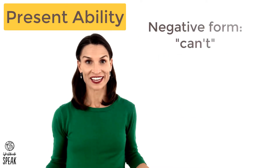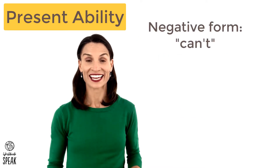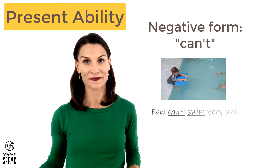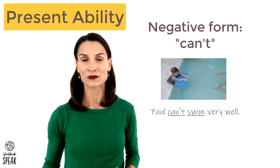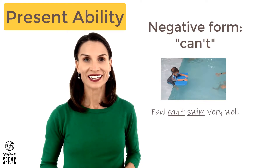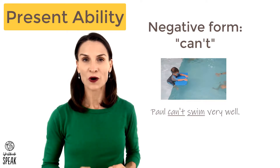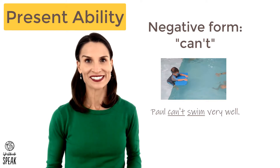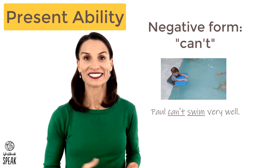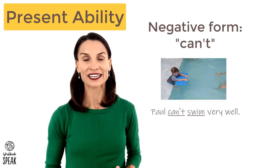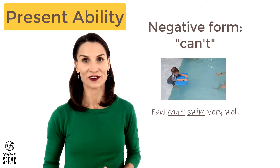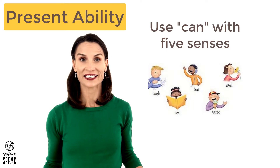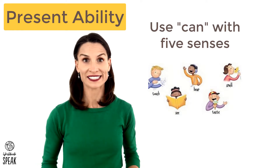With the negative of can, it's can't. Paul can't swim very well. Here, you almost don't hear the T, so it sounds like 'can' but it's can't. Paul can't swim very well. We also use can with the five senses: see, hear, smell, taste, touch.